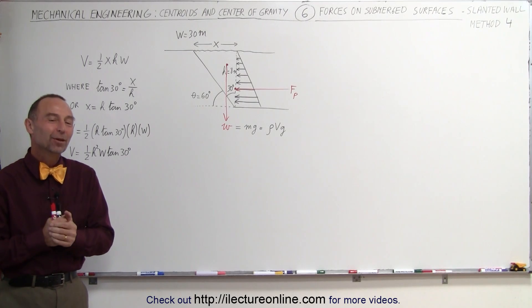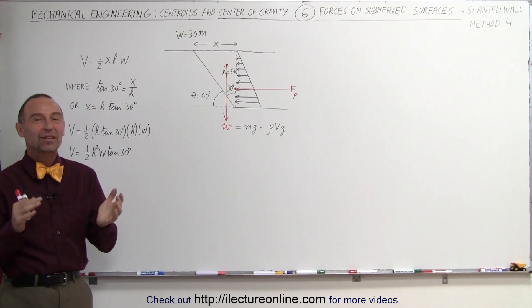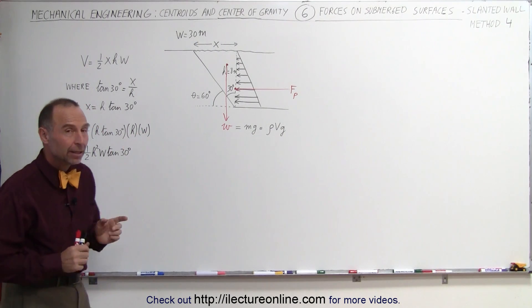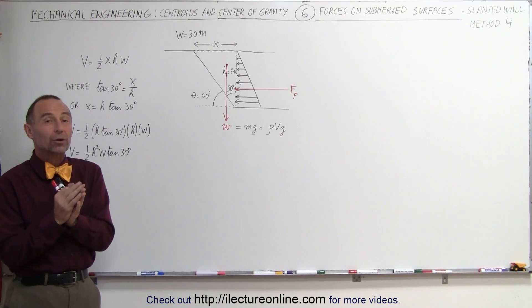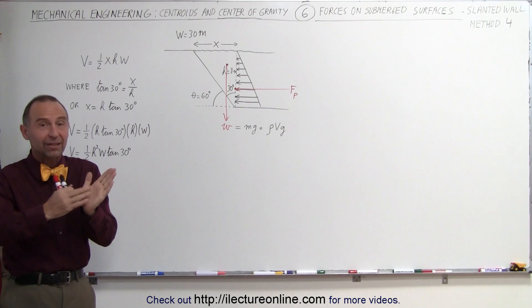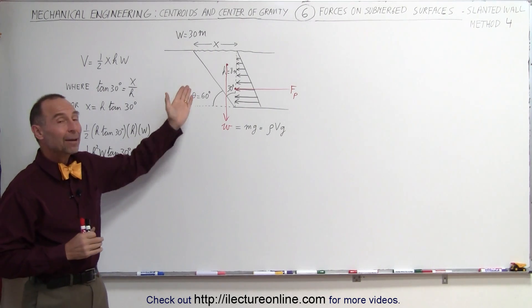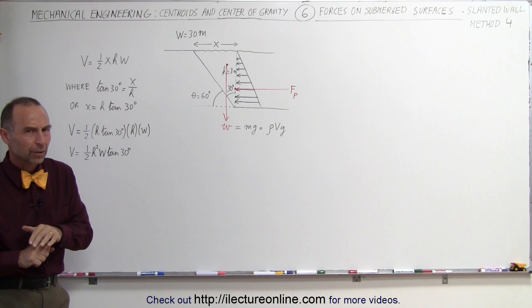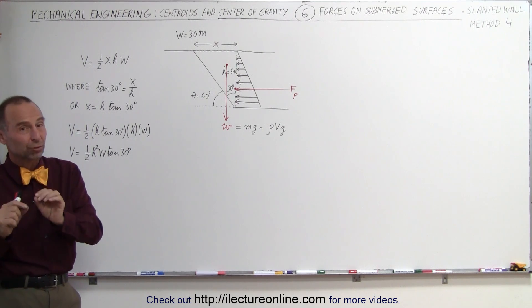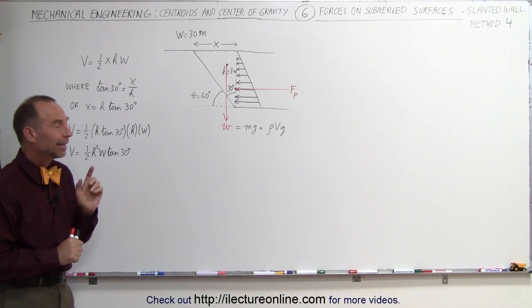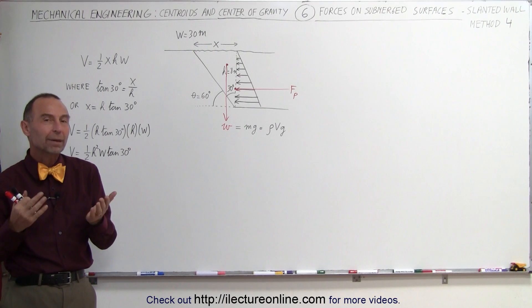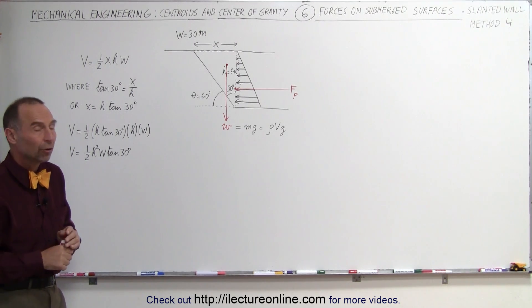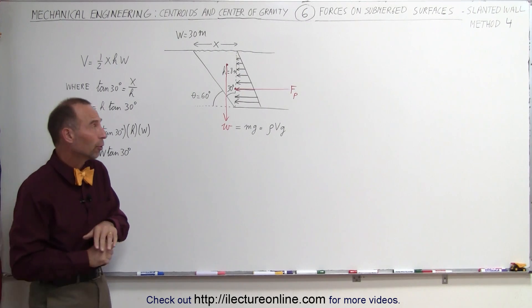Welcome to Electronline. So far we've seen three very good methods to find the force on the slanted portion of a dam, but those three methods only work when you have a straight line slanted portion. What if the dam has a curved portion? Then those methods no longer work, or they would be much more difficult to implement. In this particular case we're going to see a fourth method that is actually usable for any kind of submerged dam portion on which we want to find the total force.